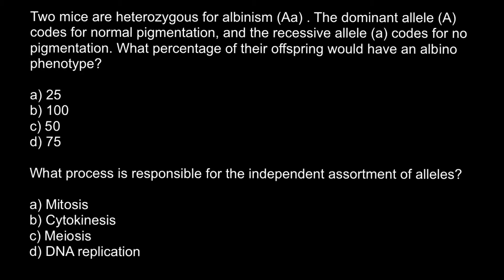Here is the first question: Two mice are heterozygous for albinism (Aa). The dominant allele (A) codes for normal pigmentation, and the recessive allele (a) codes for no pigmentation. What percentage of their offspring would have an albino phenotype?